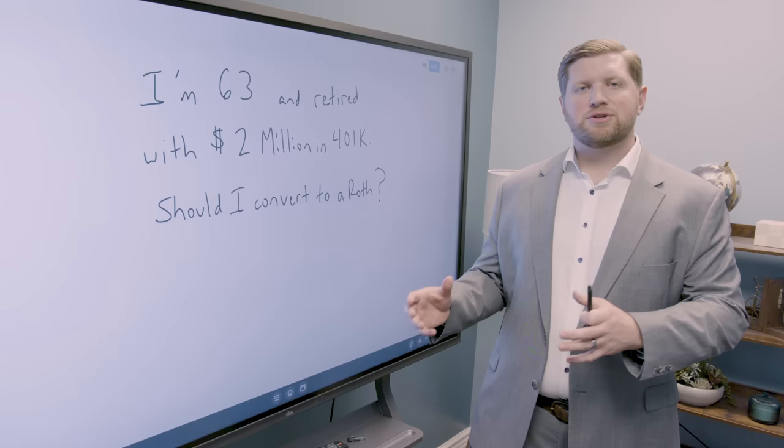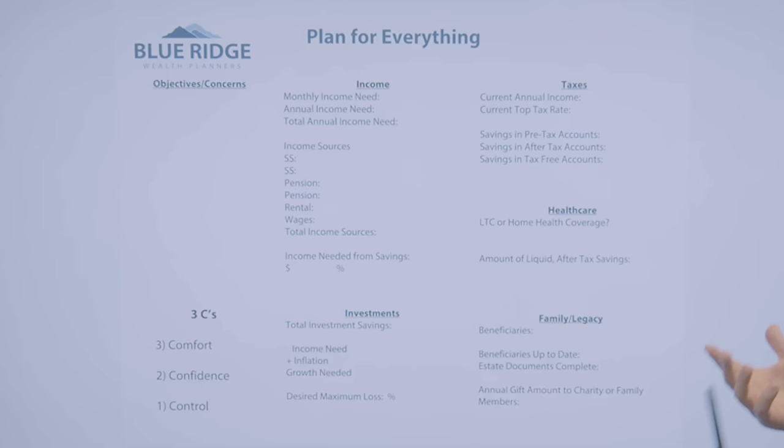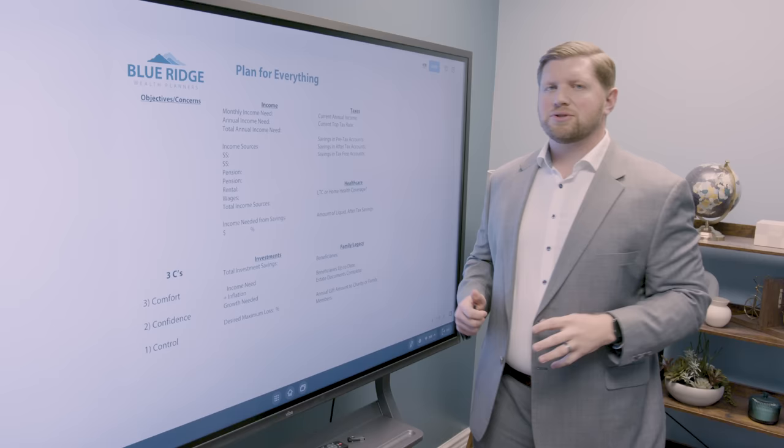And so as we look at this, obviously there are a lot of things that need to be considered when we go into a retirement planning conversation. And so as we look, income, investments, taxes, healthcare, family legacy, make up what we call a plan for everything for retirement. We're going to be focusing primarily on the income needs today and in the future of this couple, but also the tax ramifications. And what you're going to see is there's a lot of overlap in these areas, which is why it's important to make sure that you're getting the right level of planning.